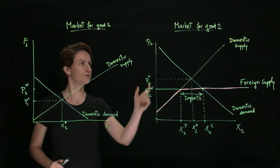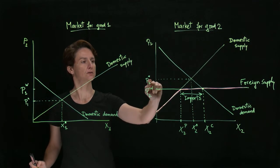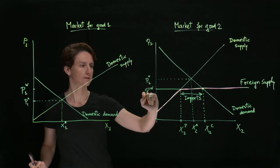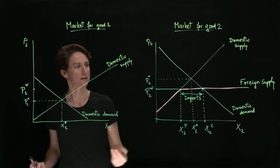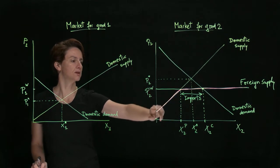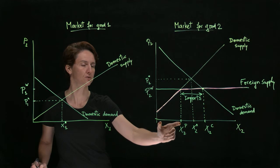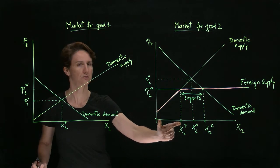We already saw how if, in a given market, the equilibrium price without trade is greater than the world price, then when the country opens up to trade, it will import that good. There will still be some quantity produced internally by domestic producers usually, but then the rest of the quantity consumed domestically will be imported from foreign producers.